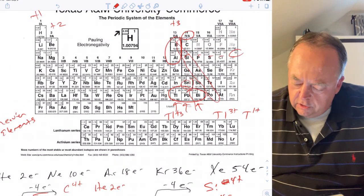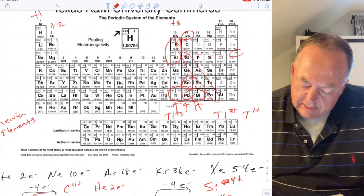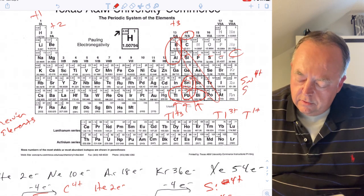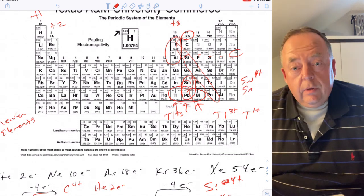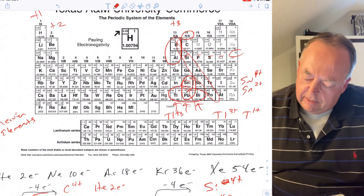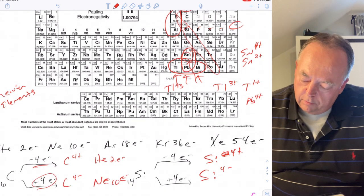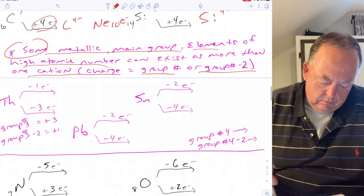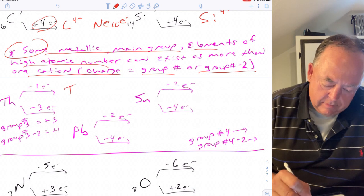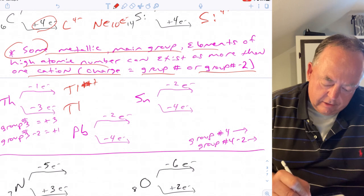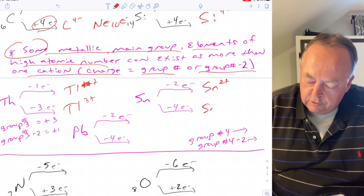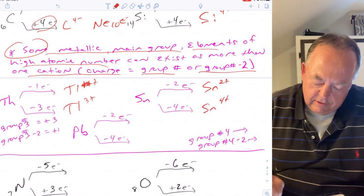For the heavier group four elements like tin and lead at the bottom of the periodic table, they can be plus four — the group number — or plus two, which is the group number minus two. So tin can be plus two or plus four, and the same applies to lead. Thallium in group three can be one plus or three plus, and tin can lose two electrons and be two plus, or lose four and be four plus.